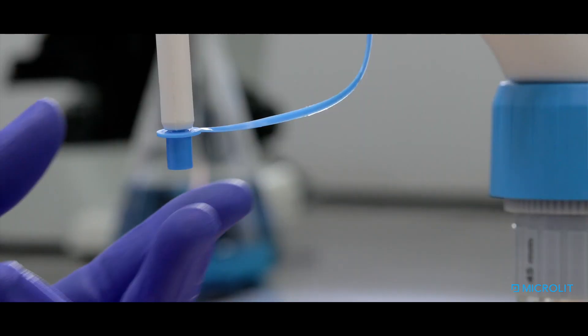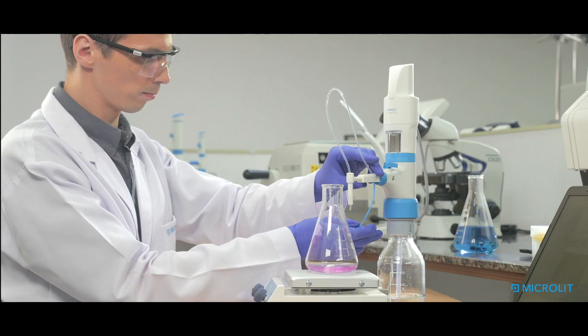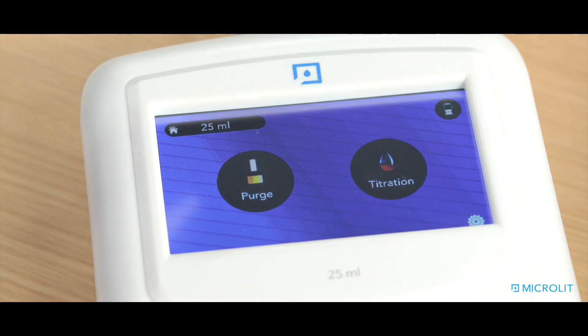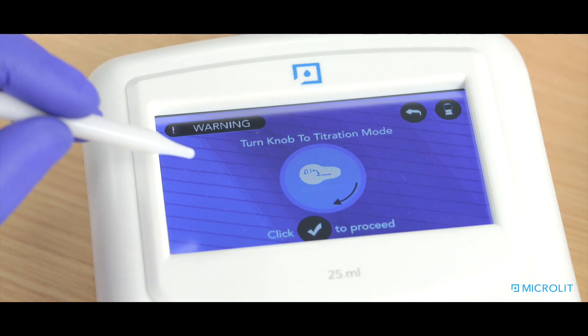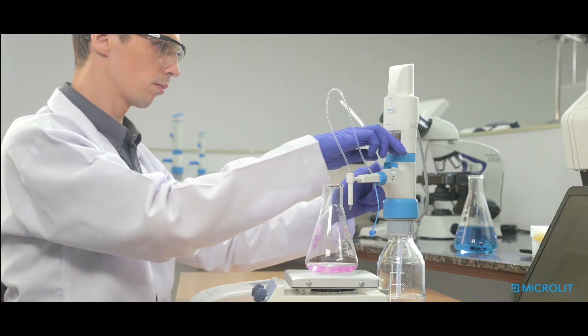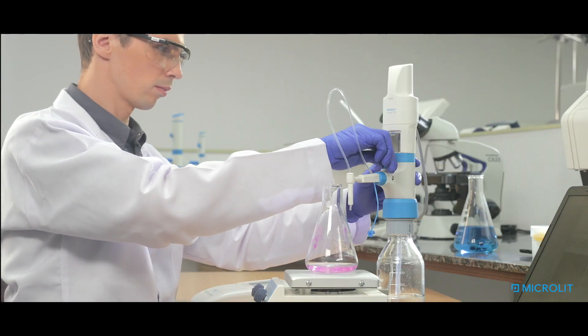Now for titration. Remove the cap from the discharge tube. Choose the titration mode, turn the knob clockwise to set at titration mode, and touch the tick mark when ready.